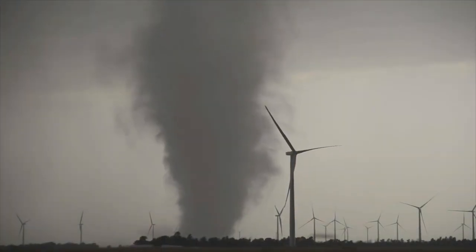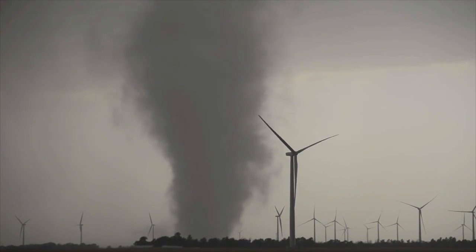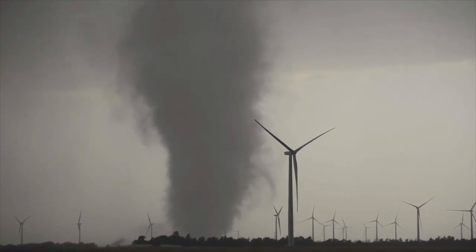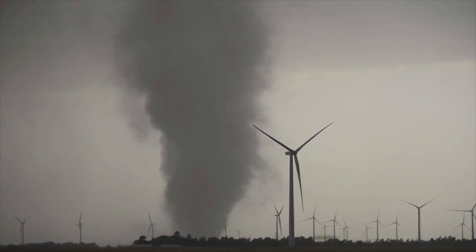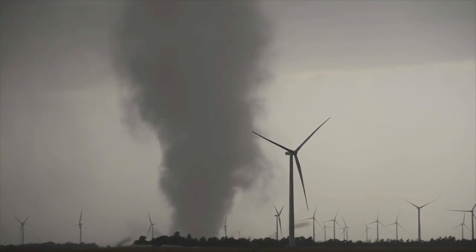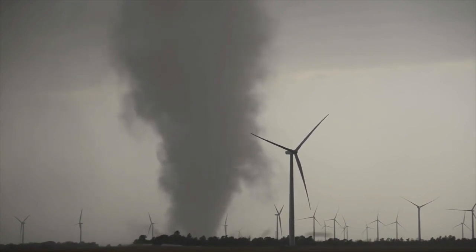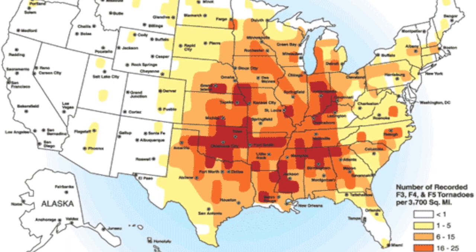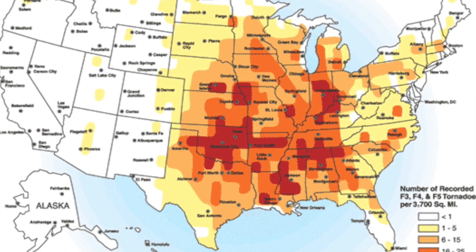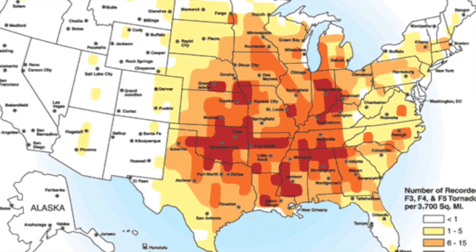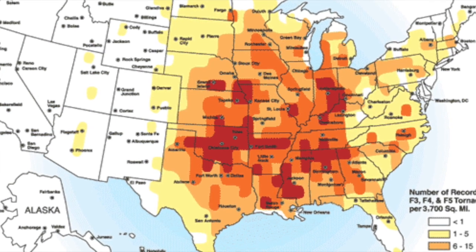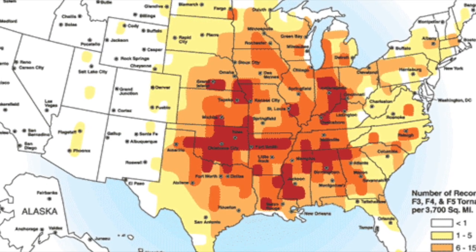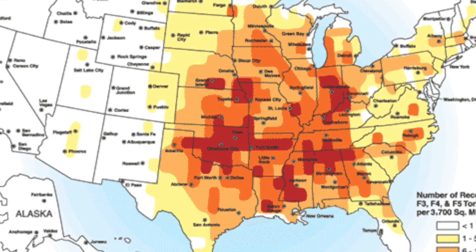Where do tornadoes occur? Good question. Tornadoes can form most anywhere, but most of the tornadoes in the United States occur in an area called Tornado Alley. Tornado Alley stretches from northern Texas to South Dakota and from Missouri to the Rocky Mountains. There are over 1,000 tornadoes in the United States every year.